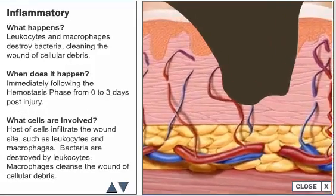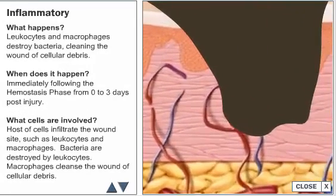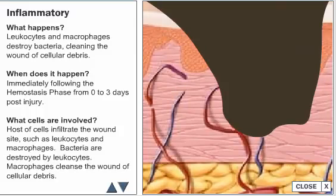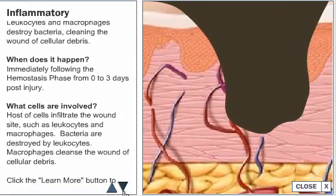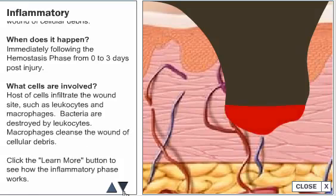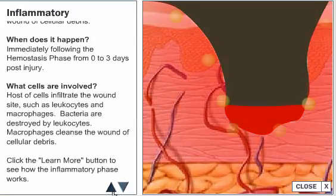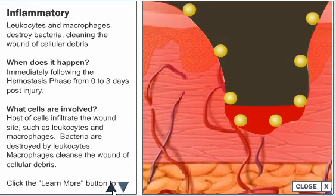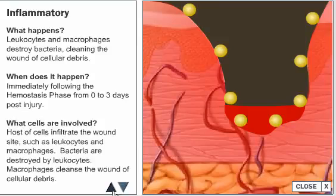Following hemostasis, the inflammatory phase begins. The local signs and symptoms that occur during the inflammatory phase are swelling, increased fluid, perfusion of blood, redness, release of epinephrine, histamine, heat, histamine response, and pain.